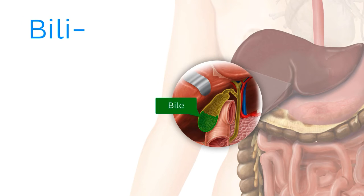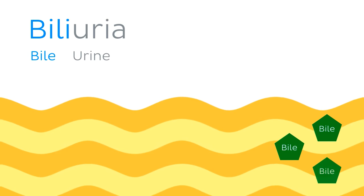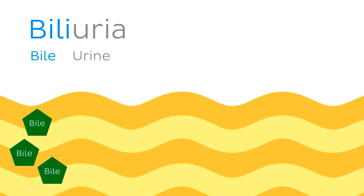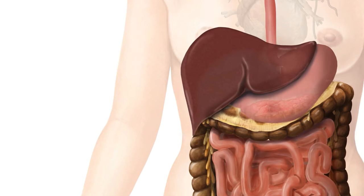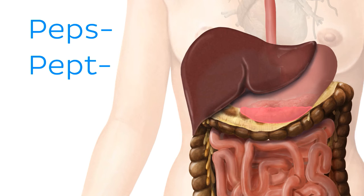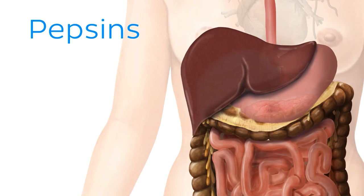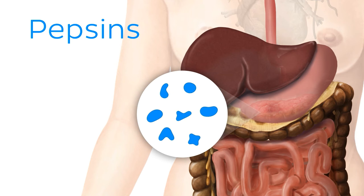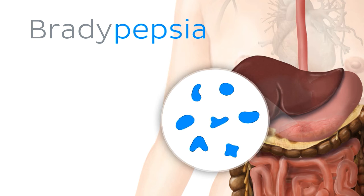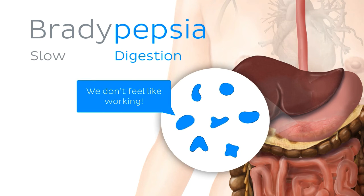Another root word pertaining to bile is the less common but more obvious 'bile', as in biluria, the presence of bile salts in urine. Let's finish up this section with one last root word which does not specifically relate to the anatomy of the digestive system but rather its function. The root word I'm talking about is 'peps' or 'pept', which comes from the Greek verb for digestion. Pepsins are a well-known group of protein enzymes which are the principal digestive component of gastric juice. Bradypepsia, on the other hand, is a term used to describe a slowness of digestion.